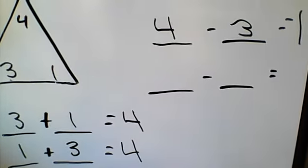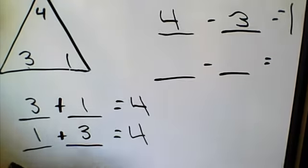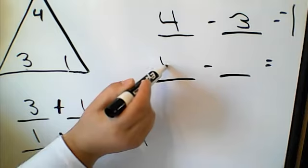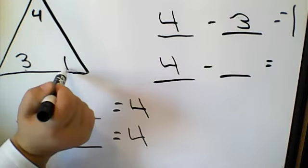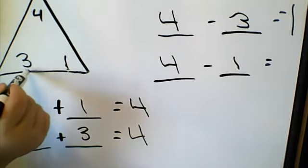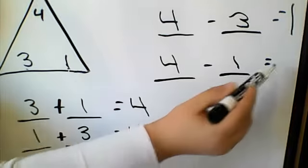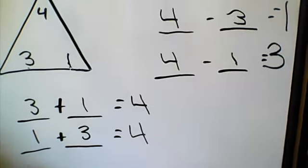You see how that works out? Where's my one? There we go. And then let's try the other one. We could say four because we start with our biggest number when we subtract minus one, four minus one equals three. So those are our fact families.